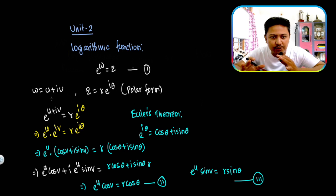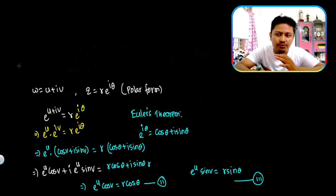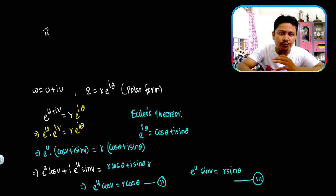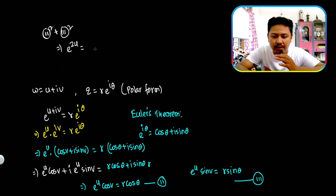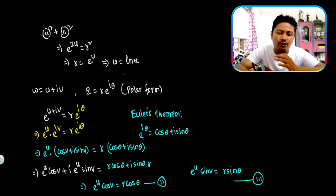To solve for u and v, take equation number 2 squared plus equation number 3 squared. What we get is e to the power twice u equal to R squared, which means e to the power u equals R, and therefore u equals ln R.